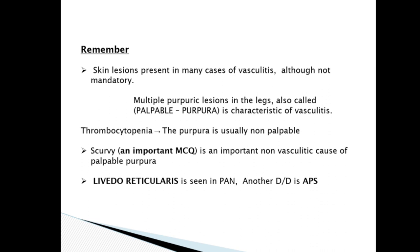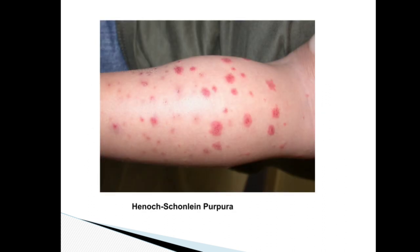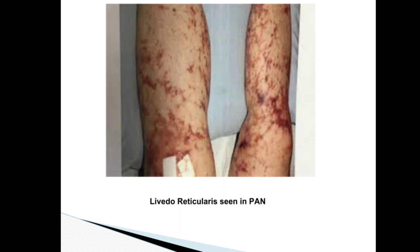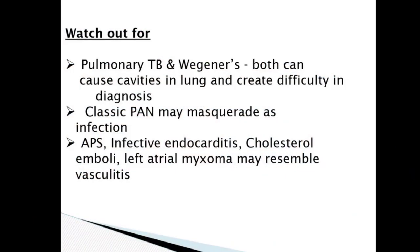Livedo reticularis is seen in PAN. Another differential diagnosis of livedo reticularis is the antiphospholipid syndrome. Classic palpable purpura can be seen in Henoch-Schönlein and livedo reticularis in polyarteritis nodosa, antiphospholipid syndrome, and sarcoidosis. Watch out — pulmonary TB and vasculitis both can cause cavities in the lungs and create difficulty in diagnosis. Classic PAN may masquerade as infection, antiphospholipid syndrome, infective endocarditis, cholesterol emboli, or left atrial myxoma. Always keep these vasculitis mimics in mind.